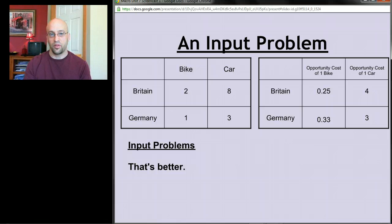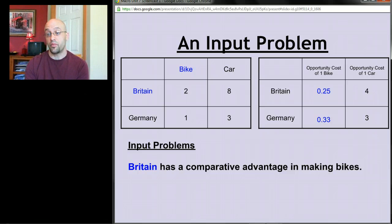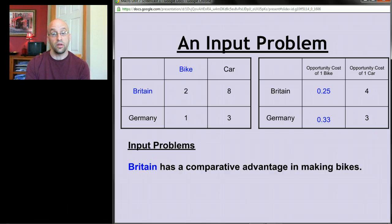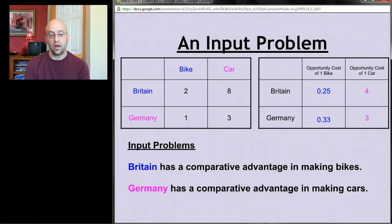Looking at bikes: Britain gives up 0.25 cars every time it makes a bike; Germany gives up 0.33 cars. Since Britain gives up less, Britain has a comparative advantage in bikes. For cars: Germany gives up 3 bikes to make a car, while Britain gives up 4 bikes. Germany gives up less, so Germany has a comparative advantage in cars and should be producing them.